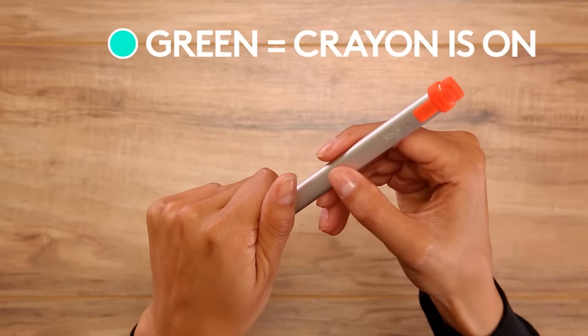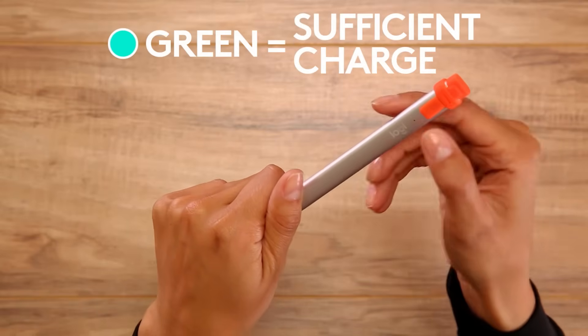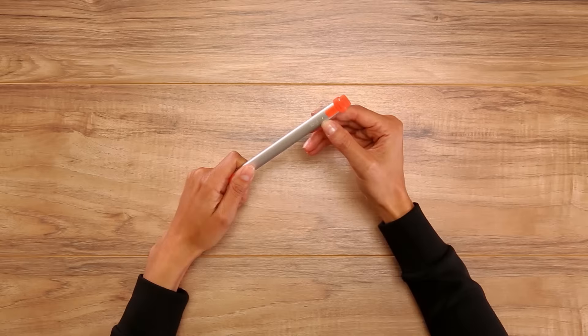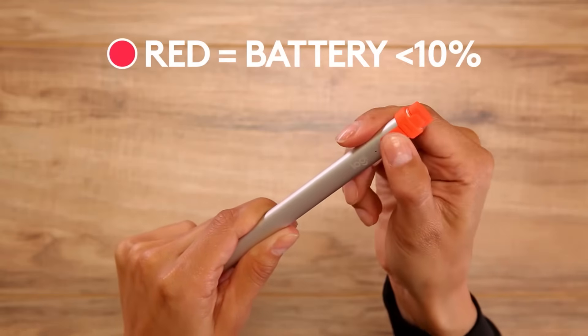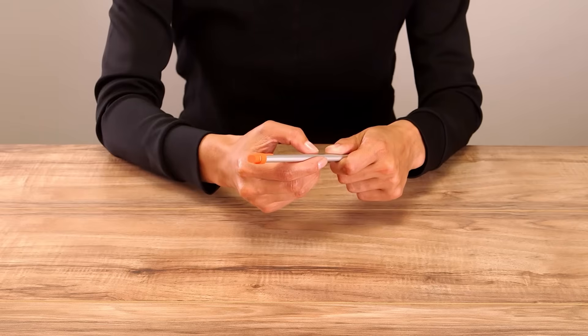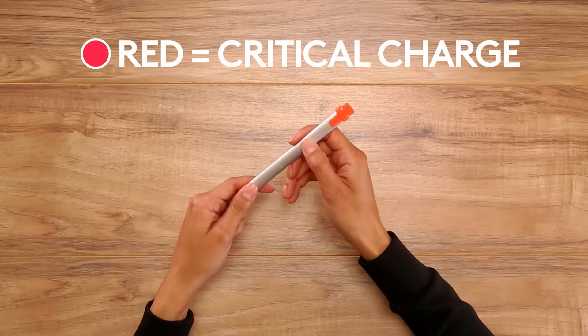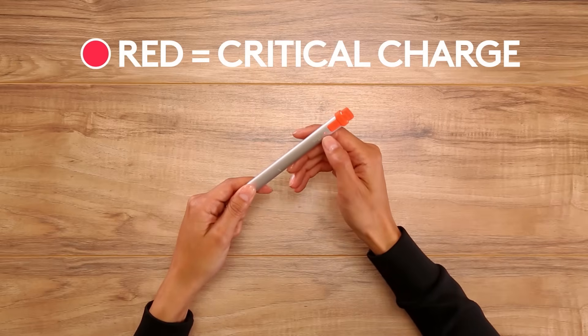Green means power is on and battery is sufficient at above 10%. Red means power is on and the battery is at less than 10%. If the LED light is blinking red without pressing the on-off button, the battery life is critical and it needs to be charged immediately.